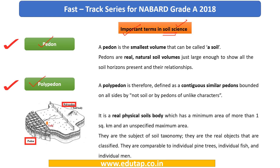Pedon is the smallest volume that can be called a soil. You can see in the picture that these are very small units of soil — the smallest possible unit. Below this size, we cannot call it soil. Pedons are large enough to show all the soil horizons present and their relationships. Yesterday we had a detailed discussion regarding the various soil horizons.